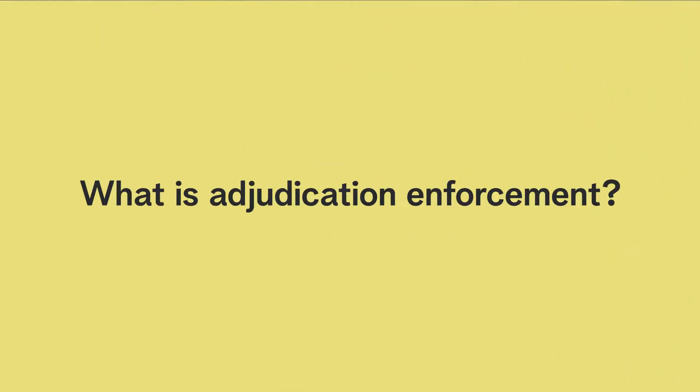So firstly, what is adjudication enforcement and in what circumstances is it necessary? As discussed in the prior training video in this series, parties to a construction contract have a statutory right to refer disputes arising under that contract to adjudication. In practice however, a party might obtain a successful outcome of adjudication only to find that the opposing party fails to comply with the adjudicator's decision. This might involve the opposing party choosing to only partially comply with the decision or simply ignoring it altogether.